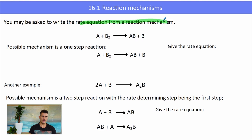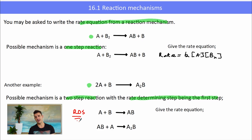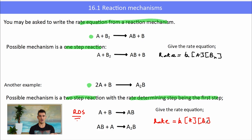You may be asked to write the rate equation from a reaction mechanism. Here is a reaction: A plus B2 goes to AB plus B. If this is a one-step reaction, the rate would equal K times the concentration of A times the concentration of B2. If we have a two-step process, we need to know what the rate determining step is, because the rate equation will always come from the rate determining step. So the rate equals K times the concentration of A times the concentration of B.